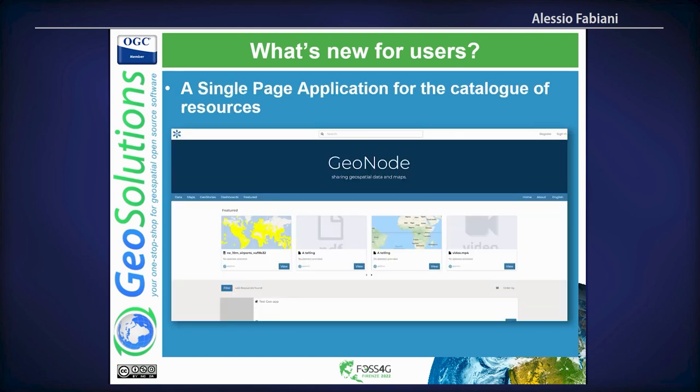If you know version 3, you had to do at least four or five clicks to reach the preview of a resource. Now everything is — we put most of the functionality into a single-page application. We have a single-page application for the main catalog where you have access to an infinite scroll of resources, sorted by creation date by default, with everything in the catalog in a single view.